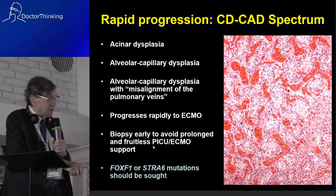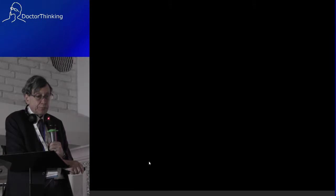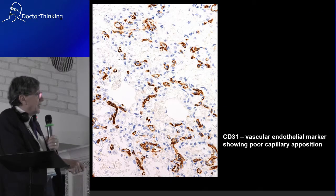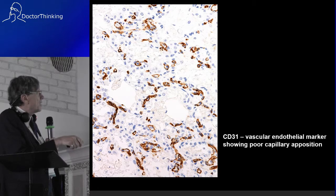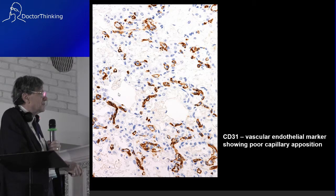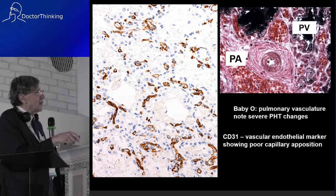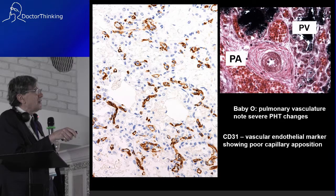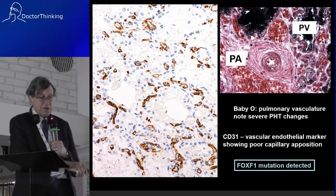Think of FOXF1 or STRA6 mutations. In another case, the brown endothelial marker shows the capillaries are very far from the alveolar spaces, and you can see a pulmonary artery with pulmonary hypertension changes. The pulmonary vein, instead of being central lobular, is next to the pulmonary artery — and this child indeed had a FOXF1 mutation.